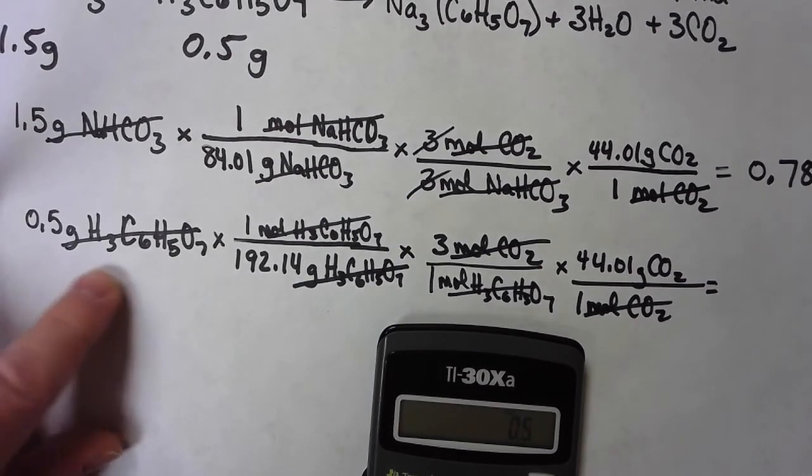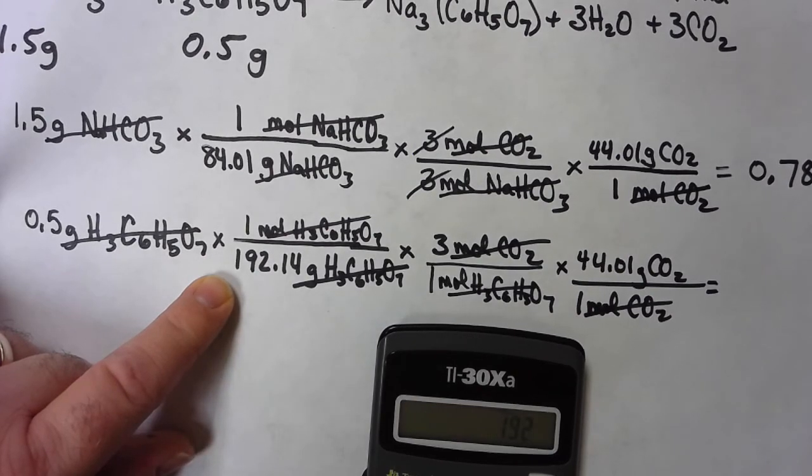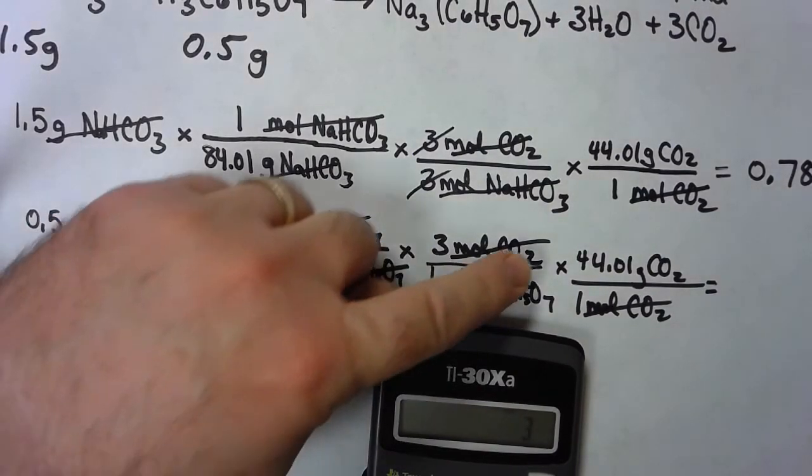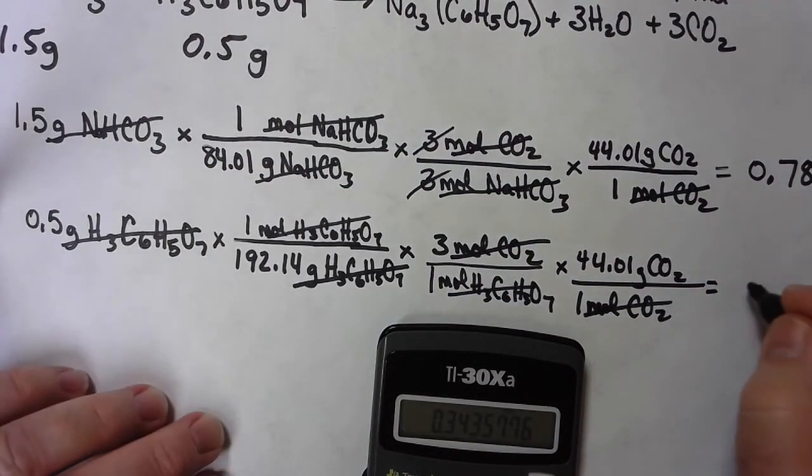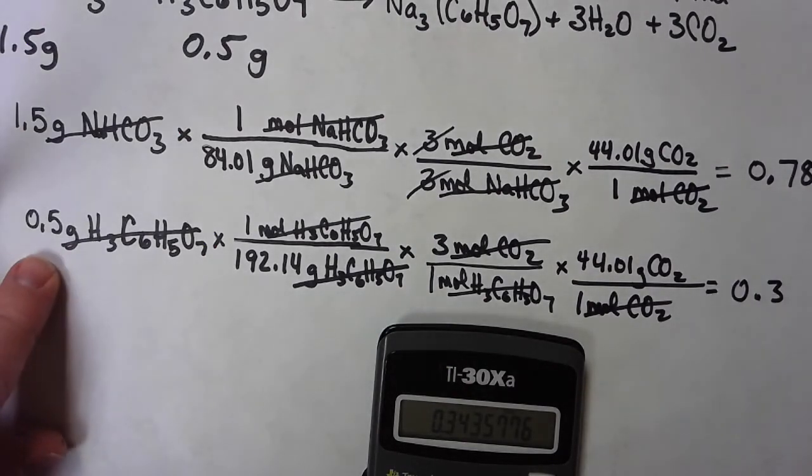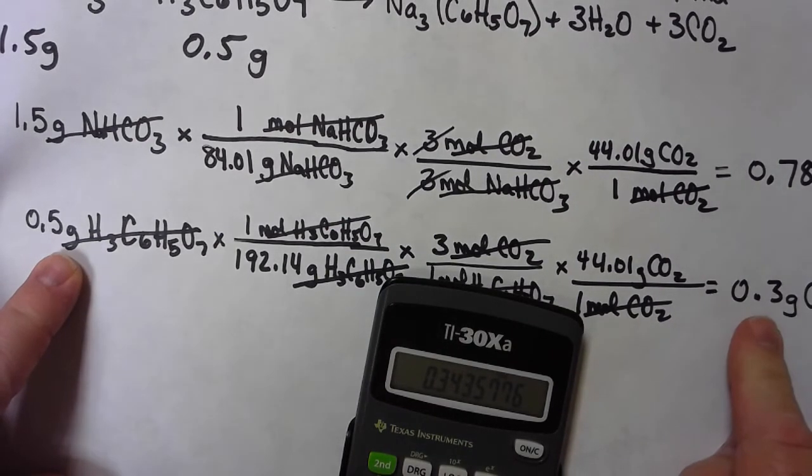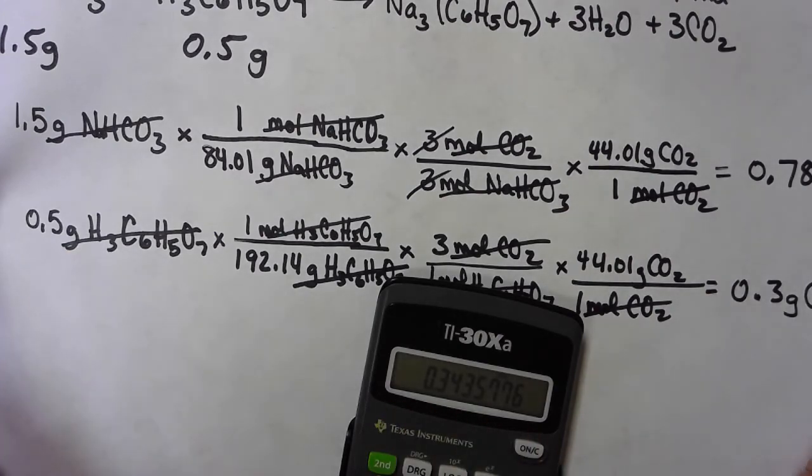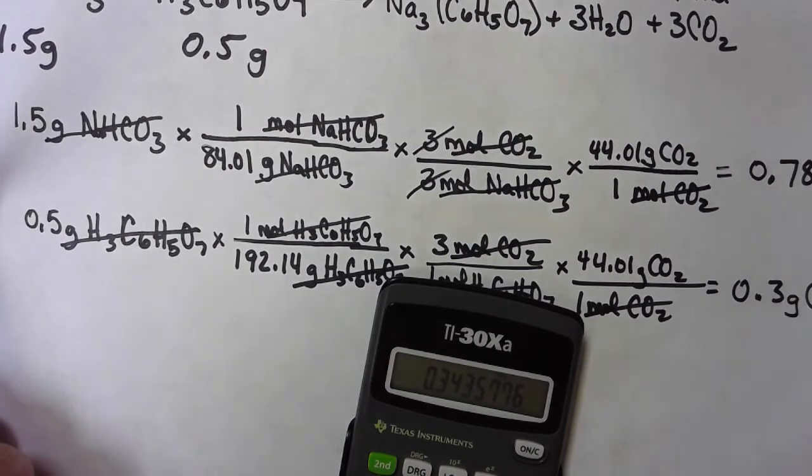0.5 divided by 192.14 times 3 times 44.01 equals 0.3435776. But I started with only one digit. I'm going to end with only one digit. If that blows you away, if you don't know how to do the rules for significant figures, then just give me everything. Don't round to some random place that you want to round to. Either give me everything or learn the rule.